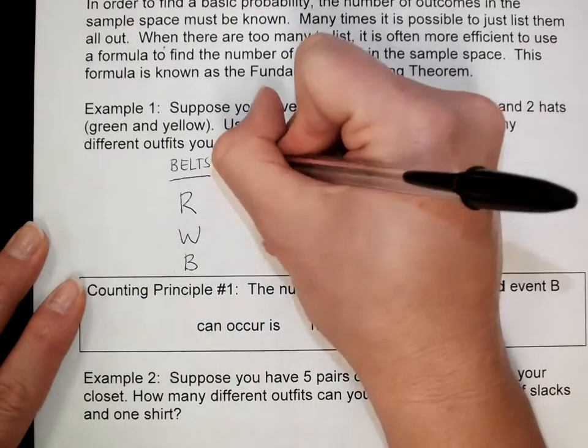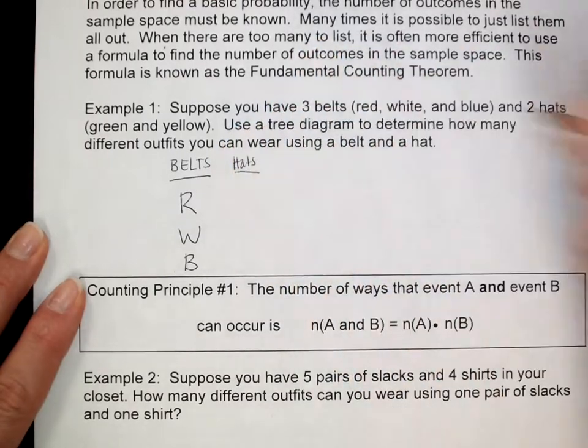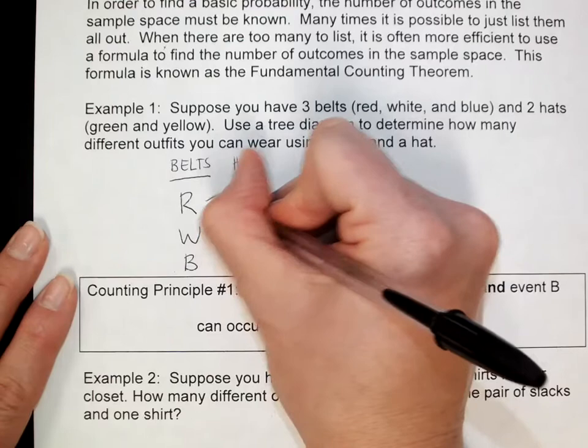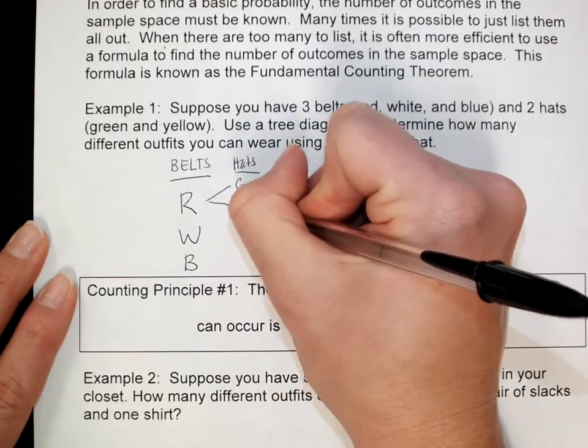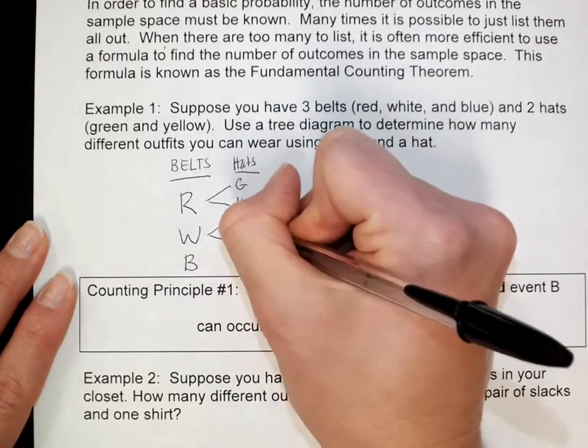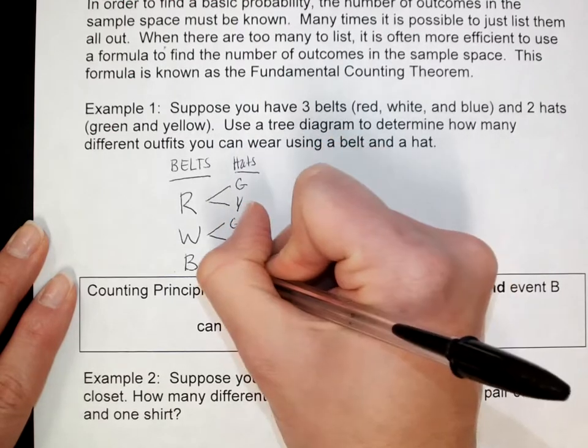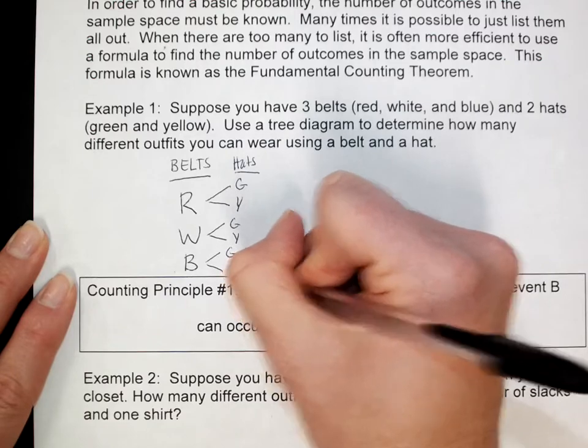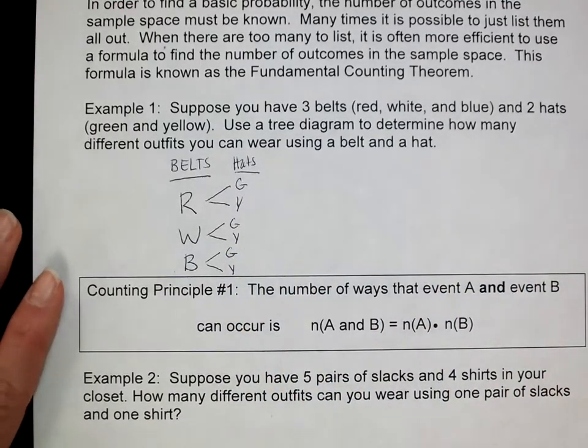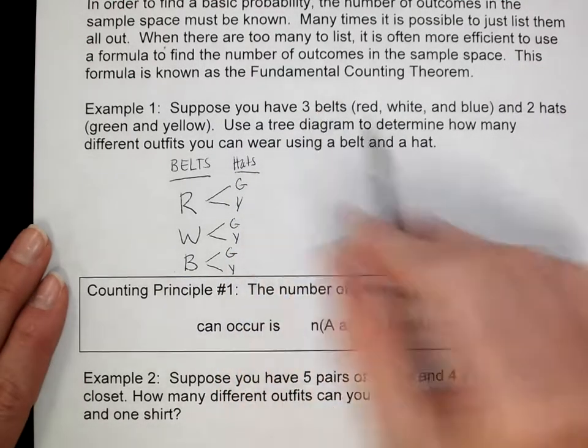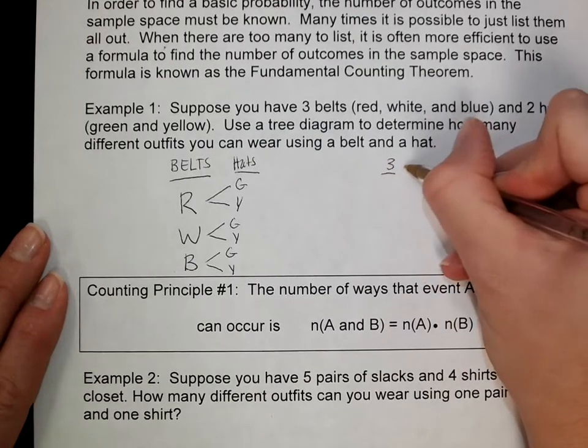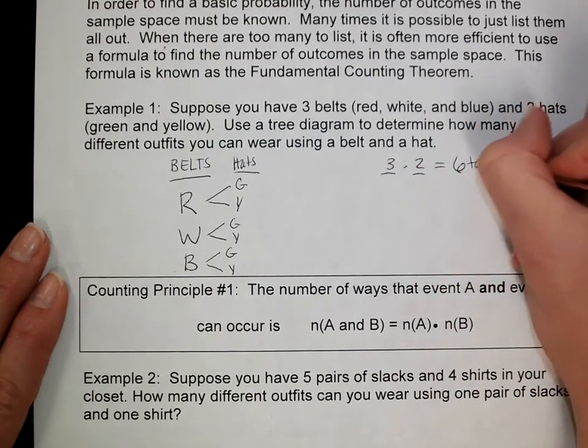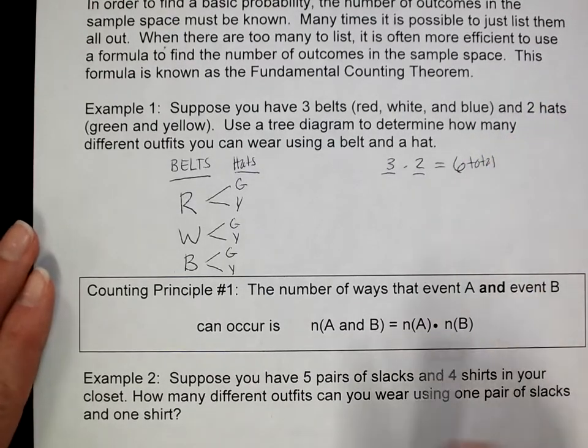When you're looking at your hats, you have two possibilities: green and yellow. So you can wear the red belt with a green hat or yellow. You can wear the white belt with a green hat or yellow. You can wear the blue belt with a green hat or yellow. So those are all your possibilities. If you have three possible belts and two possible hats, you should have six total events in your sample space. And you do.